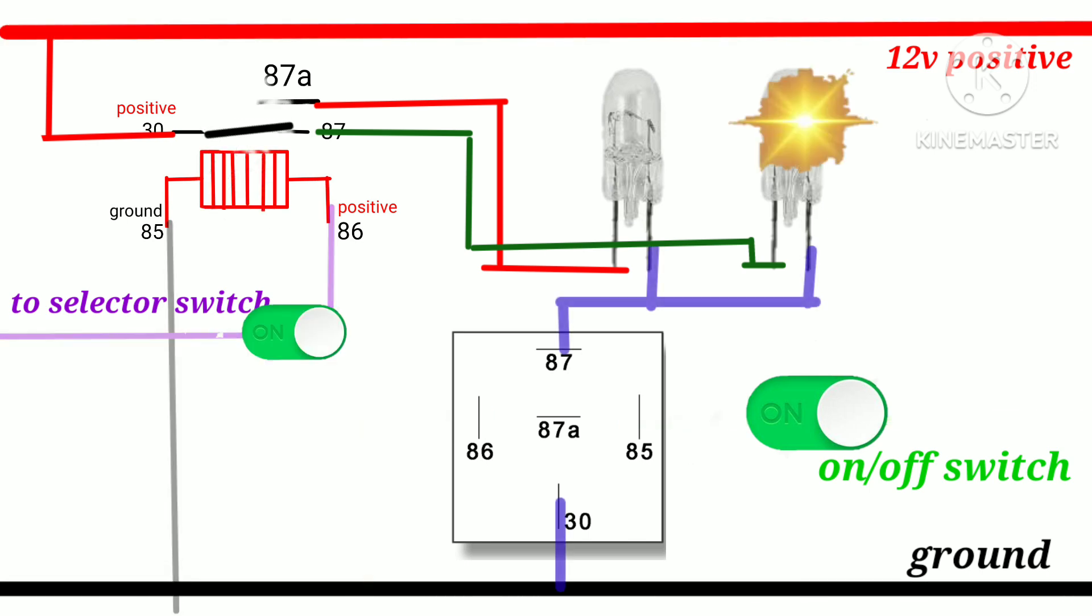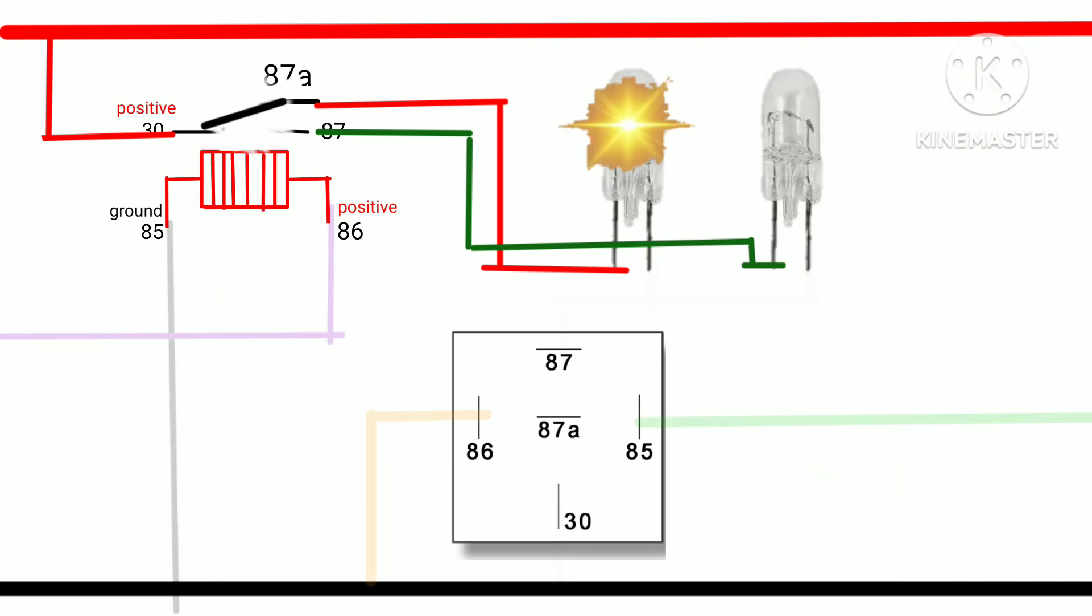Now the relay is on. The number 87a will disconnect to number 30 and the number 30 will connect to number 87. That's why bulb number two lights up. I usually use this in high and low of the car's headlight. Look how 87a and 87 switch.